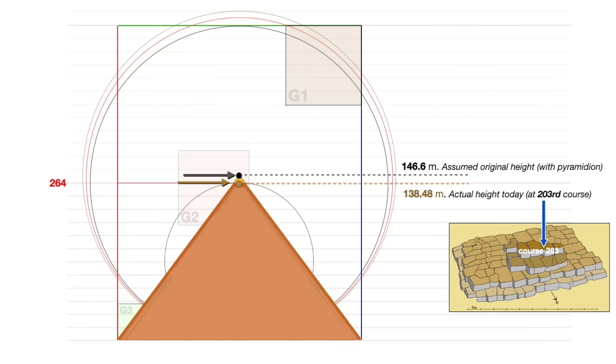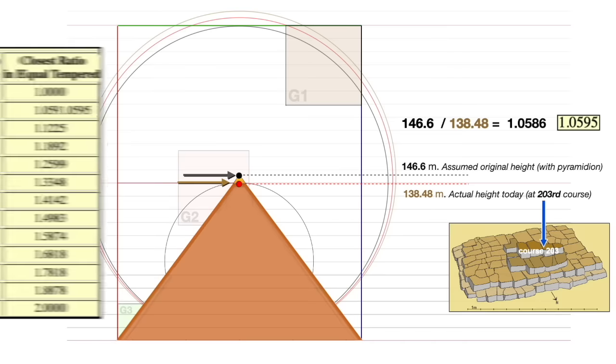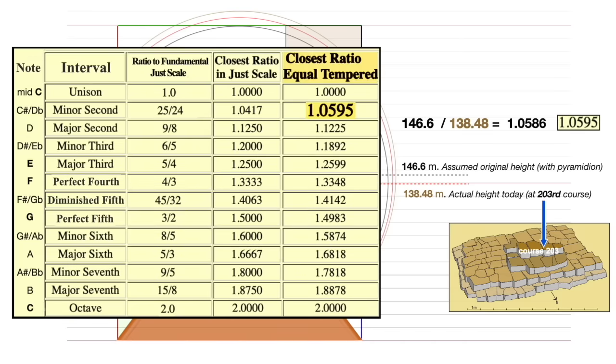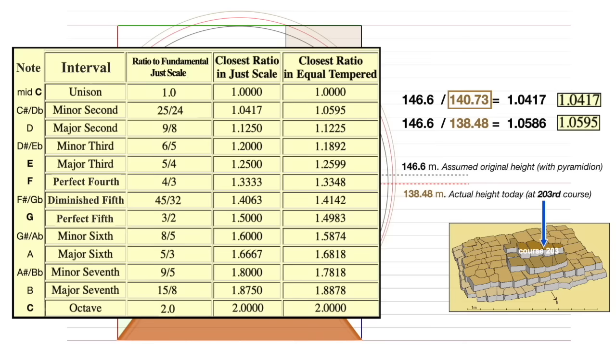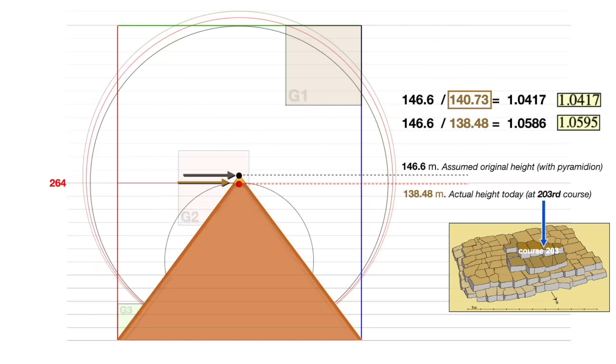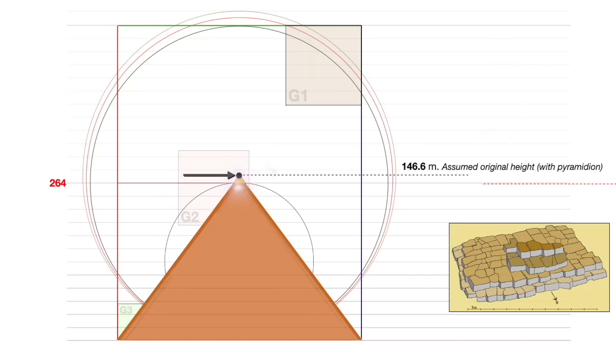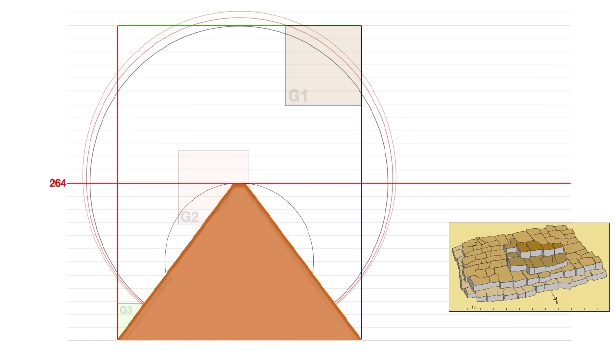And look, the assumed height divided by the actual height today is virtually identical to the musical interval of the semitone in equal temperament tuning. And even if the builders had added a couple of meters more to the platform, say for some decorative embellishments to adorn the summit of their masterpiece, that would come out to 1.0417, the same semitone interval, but in the just scale tuning. So either way, the platform of the Great Pyramid is coinciding exactly with the center line of the Giza Plateau, or to within inches, perfectly balanced between two octaves.